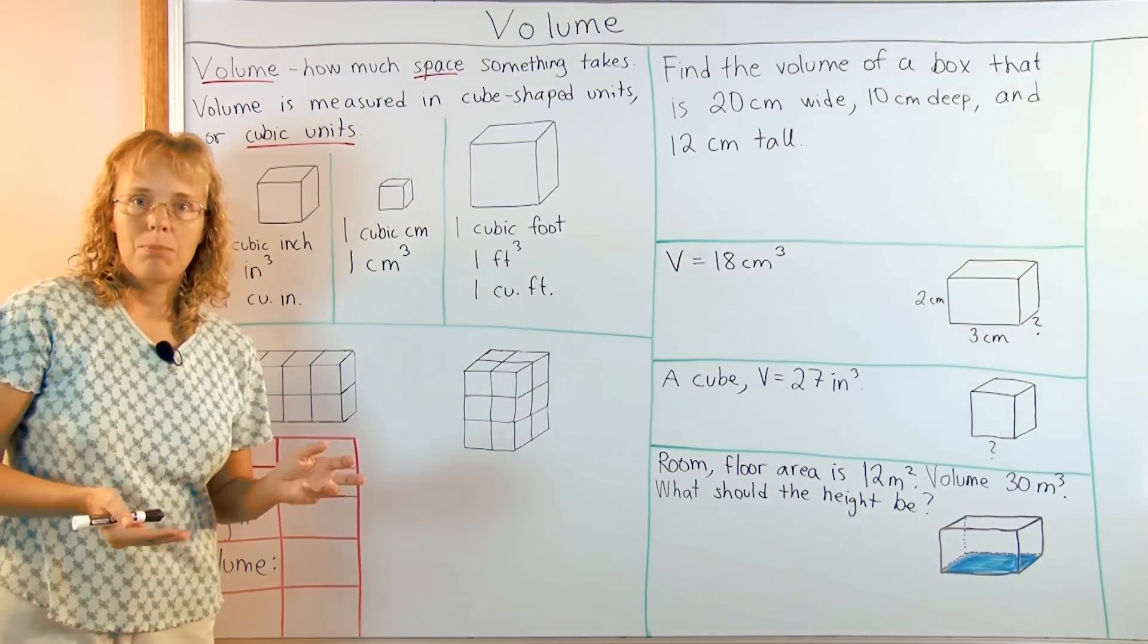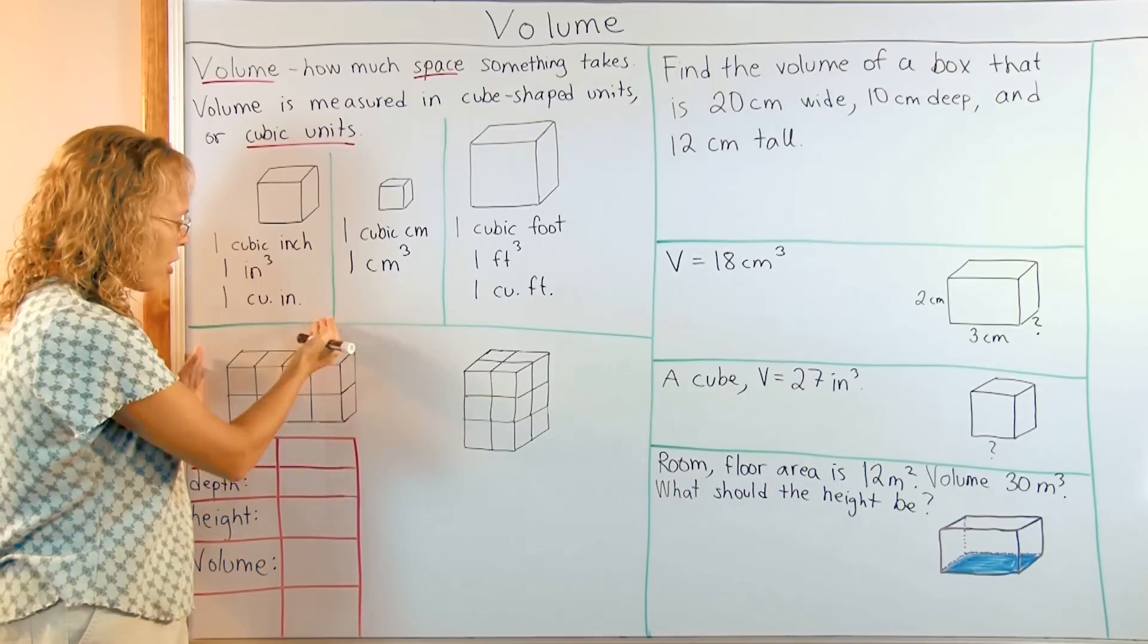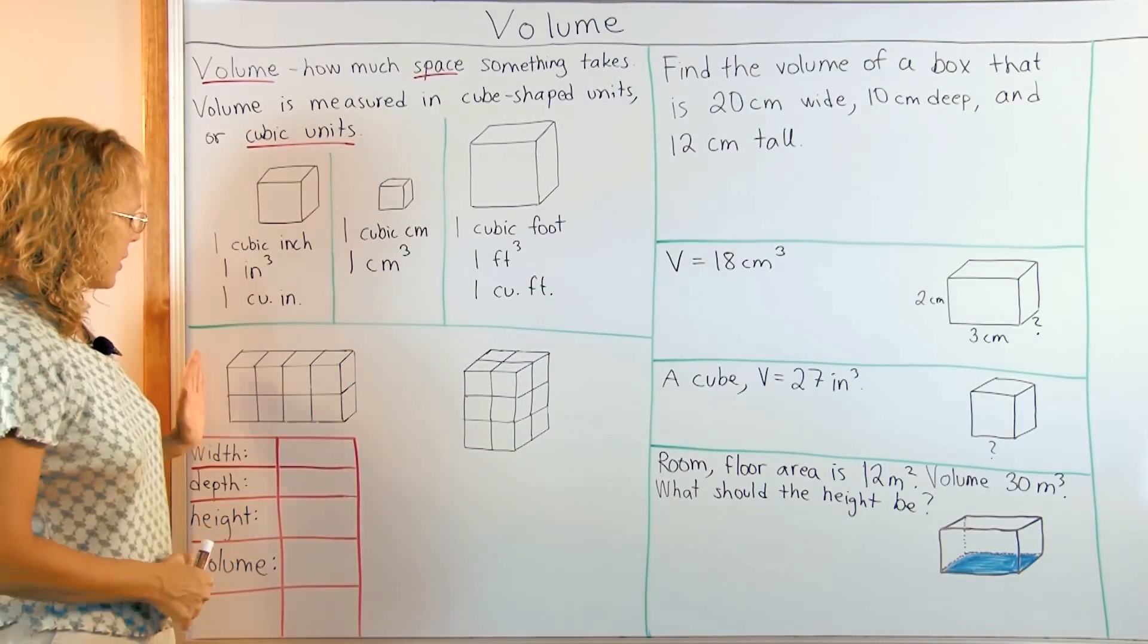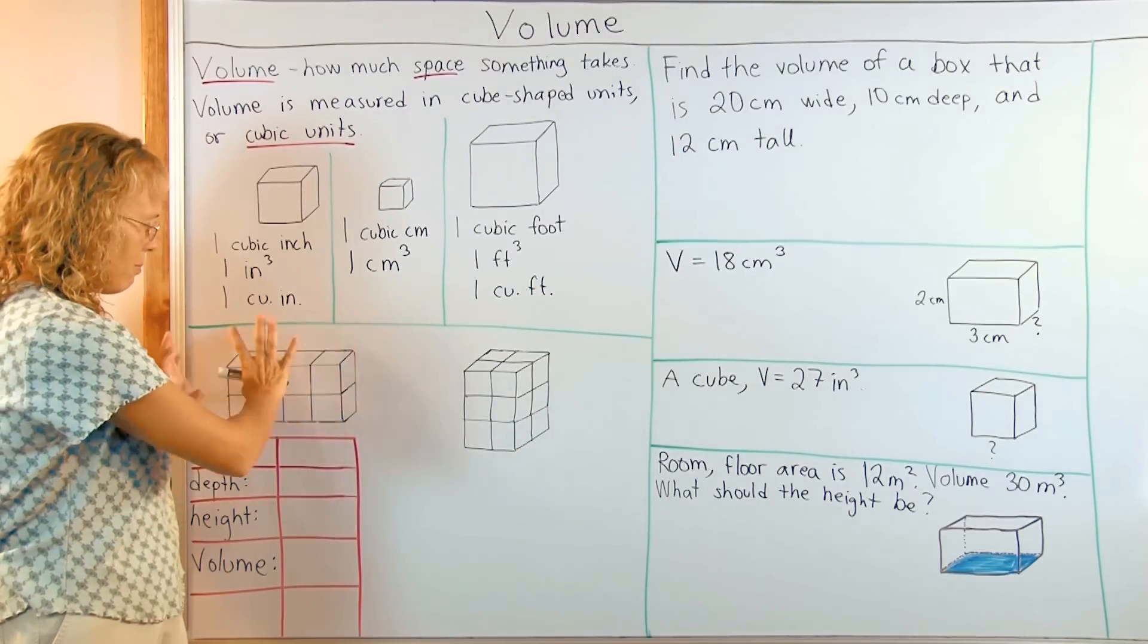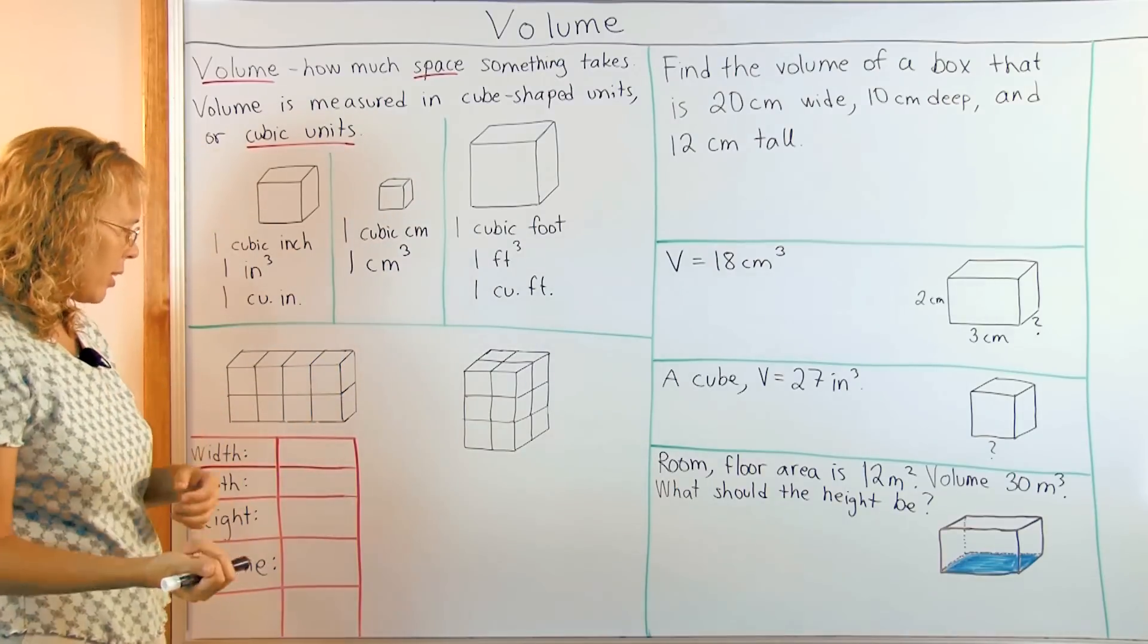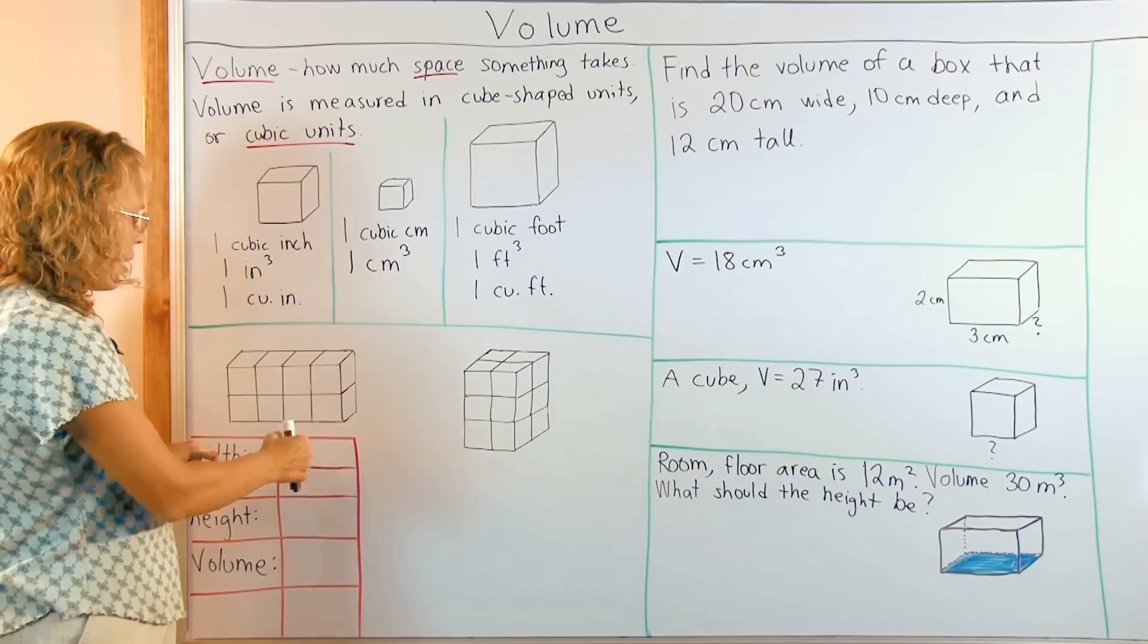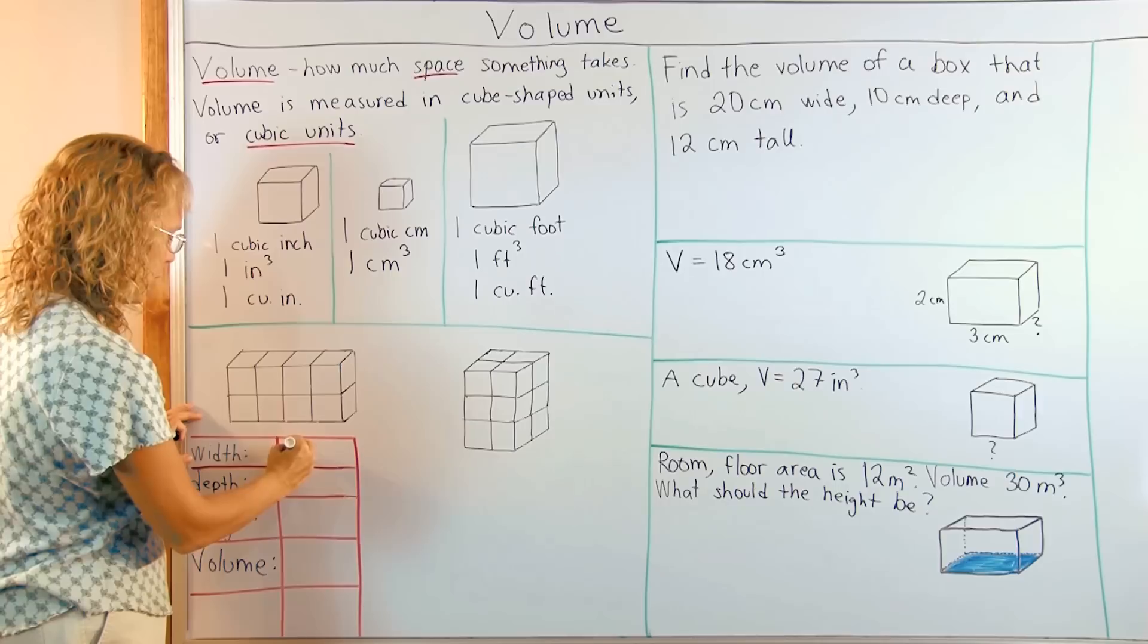As we already saw with the blocks, you can simply use multiplication to find the volume of a rectangular prism or a box. So let's say I have this many blocks stacked together into a box shaped thingy. I want to find its volume. I can use multiplication. I can check how wide it is. How many units wide is this? Okay, it is one, two, three, four. Four units wide.